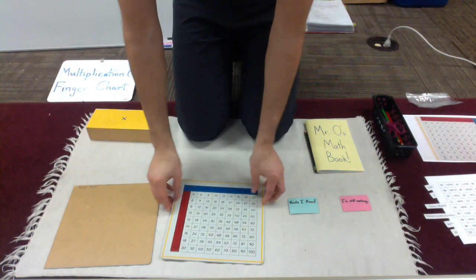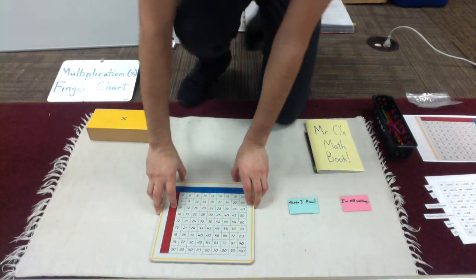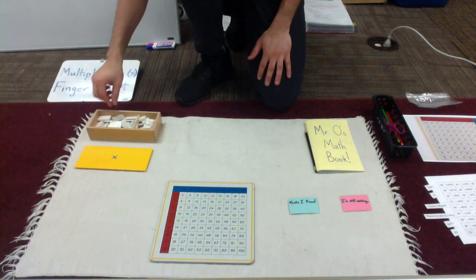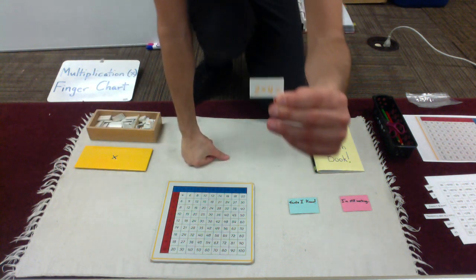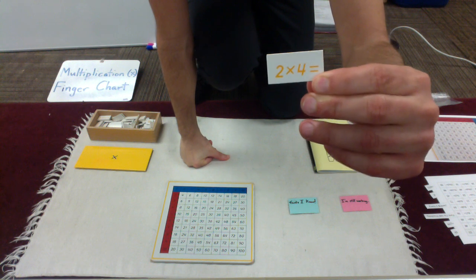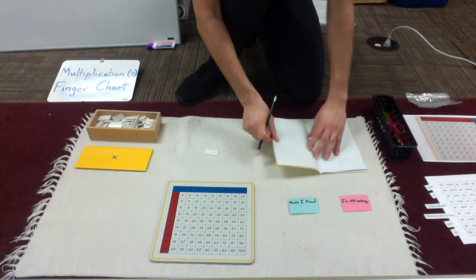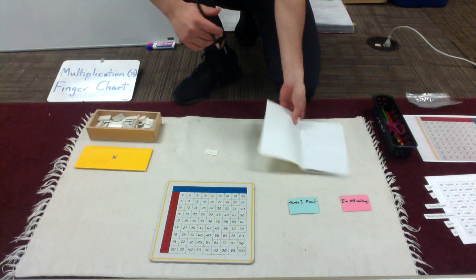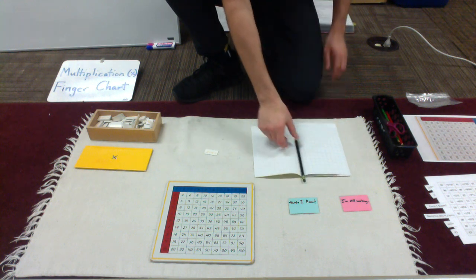So the way you'll do this at first is you'll start with some prepared equations. And here I have a box full of prepared equations. And my first equation is 2 times 4 equals. Alright, thus recorded.